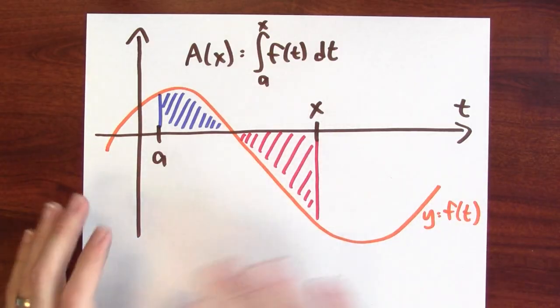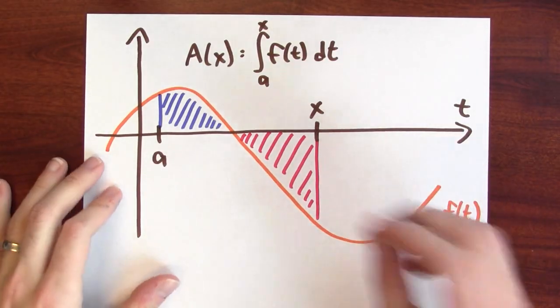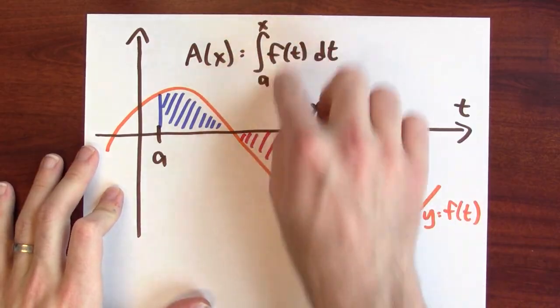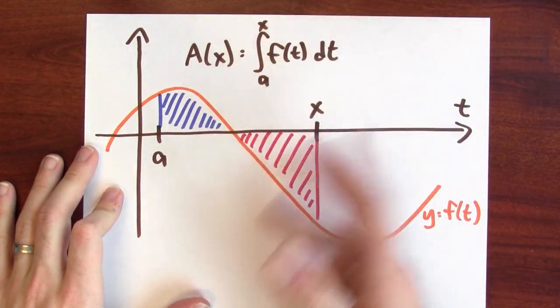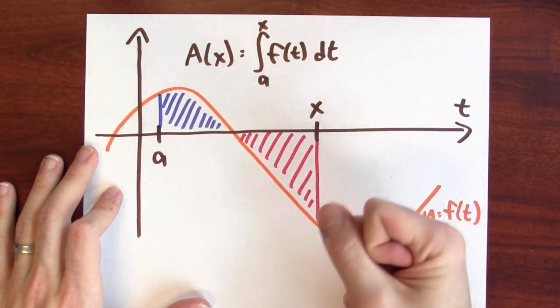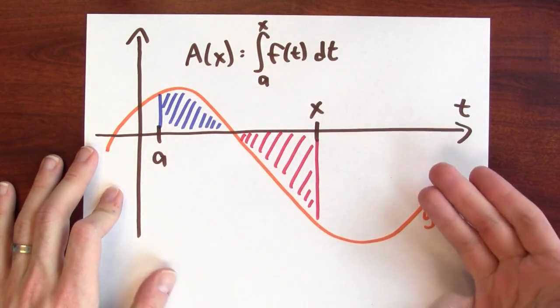When is this accumulation function decreasing? Is it ever possible to integrate over a longer interval and yet get a smaller value? Yes, it sounds counterintuitive, but that's entirely possible. And it really comes down to this issue about what these integrals are really measuring. The integrals are not exactly measuring area. They're measuring signed area.